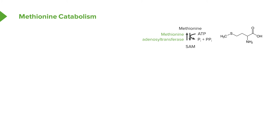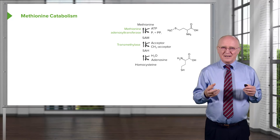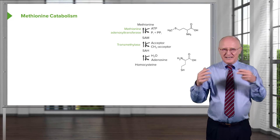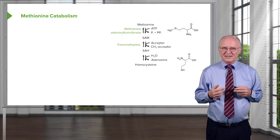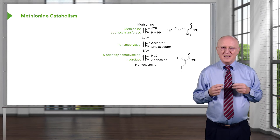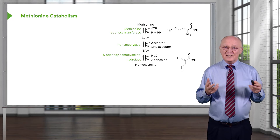The enzyme catalyzing this reaction is methionine adenosyltransferase. In the second step, S-adenosylmethionine is converted to S-adenosylhomocysteine, or SAH, via donation of a methyl group to another molecule — catalyzed by transmethylase. Next, hydrolyzing S-adenosylhomocysteine releases adenosine, creating homocysteine. The enzyme catalyzing this step is S-adenosylhomocysteine hydrolase.